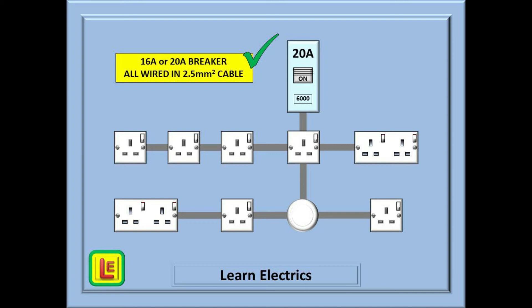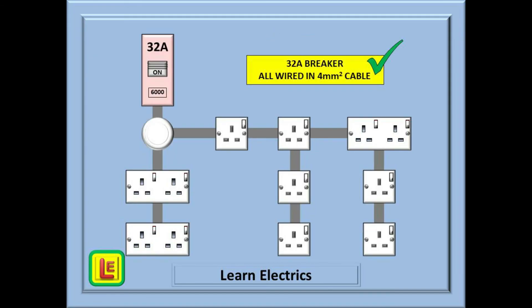You can have spurs on spurs to your heart's content with this type of circuit. Here is a similar circuit but this time employing a 32 amp breaker. 2.5 millimetre cable is not a suitable size and so this circuit is wired in its entirety in 4 millimetre cable. 4 millimetre cable will take 37 amps, which means the cable rating is greater than the breaker rating, so this circuit can have any arrangement and spurs wherever needed.